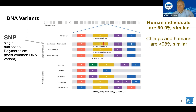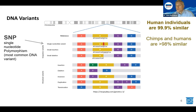Humans are 99.9% identical at the DNA level. All the phenotypic differences we can see among humans — if you look around at your colleagues — are based on just 0.1% or less of changes in DNA. Even chimpanzees and humans are largely identical. So it's these variants that drive phenotypes, and from a breeding perspective, these are the variants we're interested in to give improved performance.